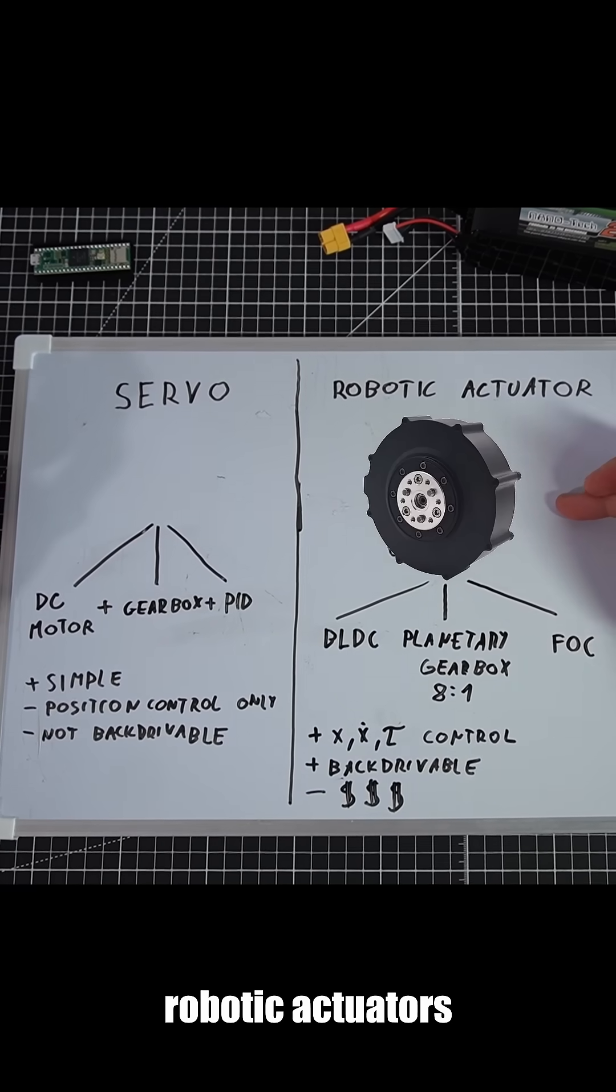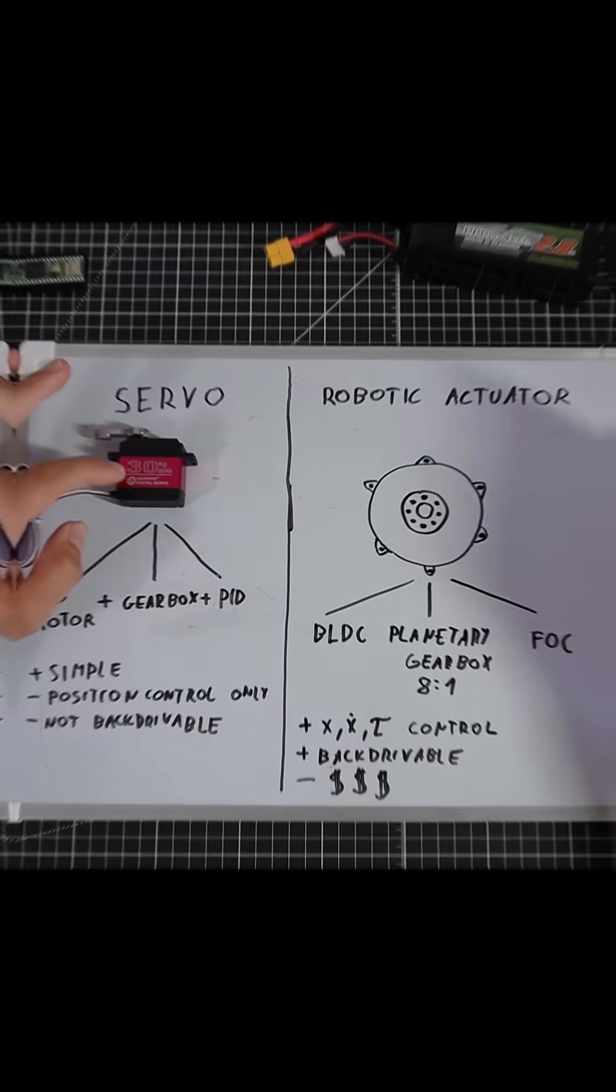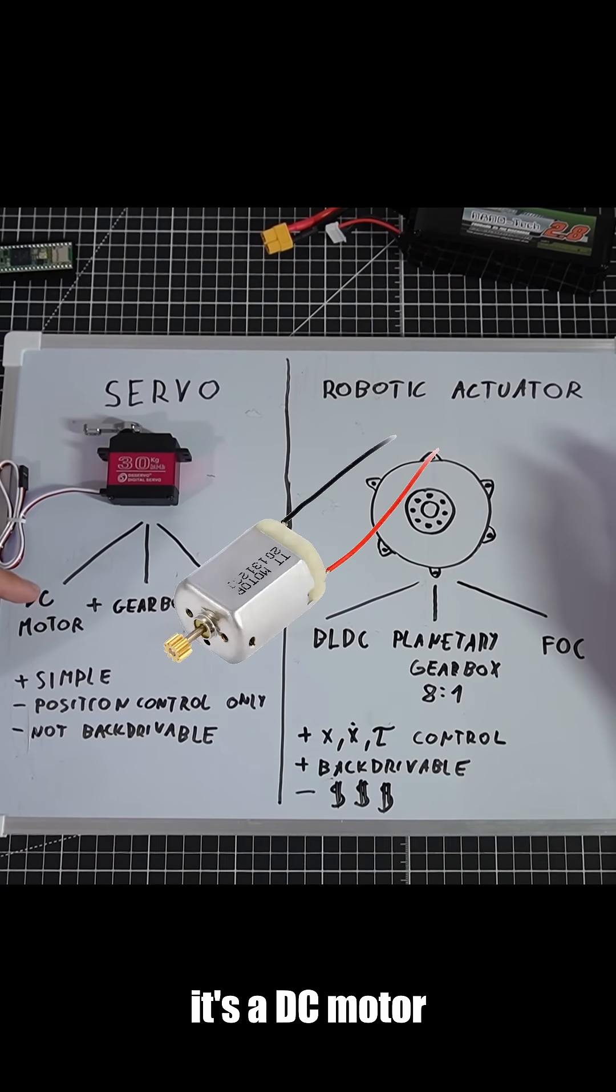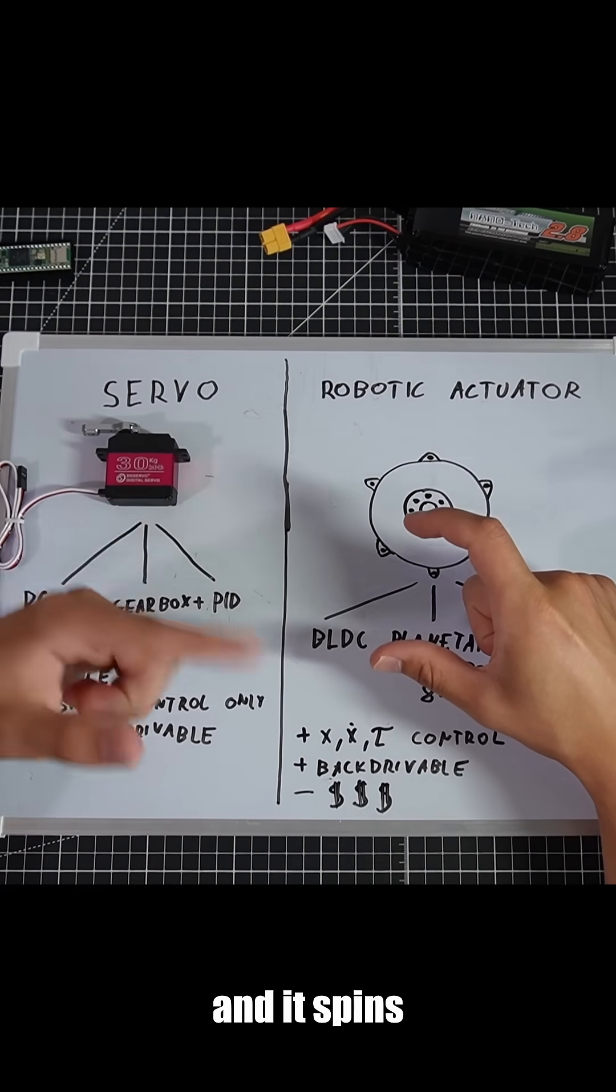This is why robotic actuators are better than servo motors. A servo motor is basically just three things together. It's a DC motor - you apply voltage to the motor and it spins.